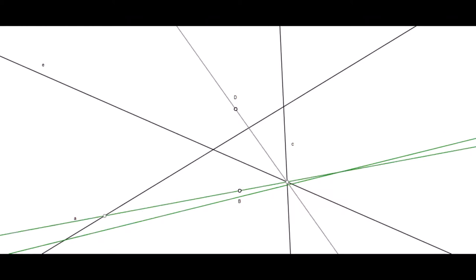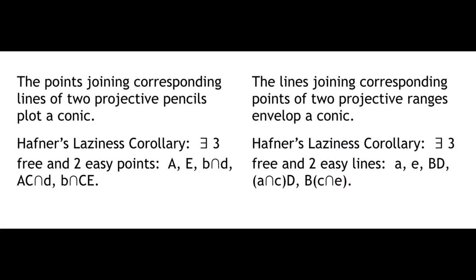Here we already have a special situation. When the point in A reaches the line joining B with CE, then so will the point in C, and also the point in E. In other words, the line joining BC with CE is a green line. Yes, the whole laziness corollary also applies in the polar version.